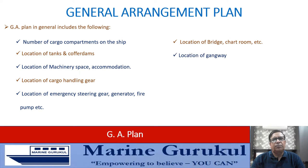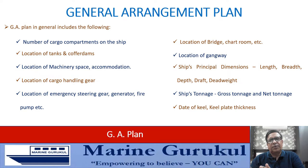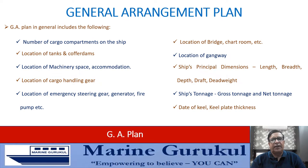The GA plan of the ship includes: the number of cargo compartments and their location; location of tanks and void spaces like cofferdams; location of machinery space and accommodation; location of cargo handling gear; location of emergency steering gear, emergency generator, and emergency fire pump; location of bridge and chart room; location of gangway; principal dimensions of the ship such as length, breadth, draft, and depth; and the ship's tonnage — both gross and net — and the date the keel was laid.